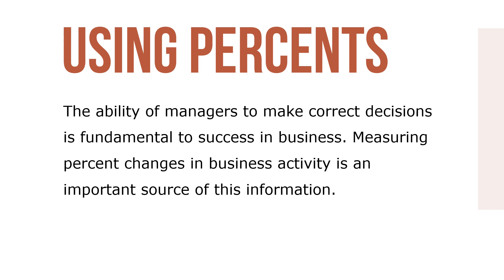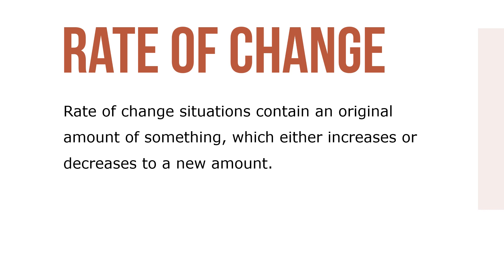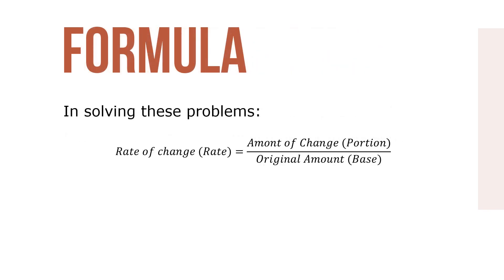The ability of managers to make correct decisions is fundamental to success in business. These decisions require accurate and up-to-date information. Measuring percent changes in business activity is an important source of this information, as percents often describe a situation more informatively than raw data alone. Rate of change means percent change; therefore, the rate is the unknown. Rate of change situations contain an original amount which either increases or decreases to a new amount. We use the formula R = P ÷ B, where the original amount is always the base and the amount of change is the portion.